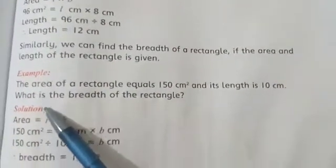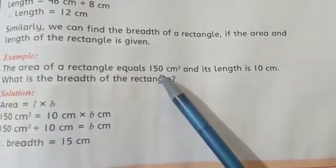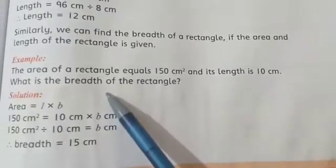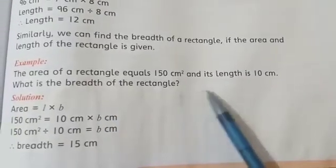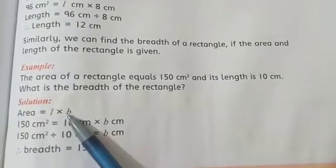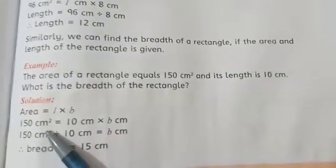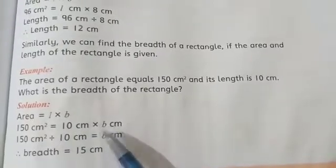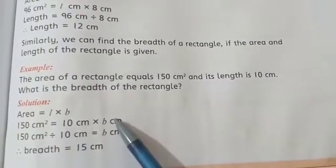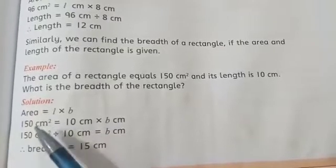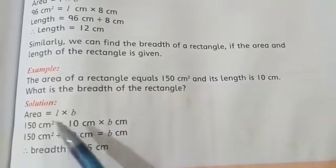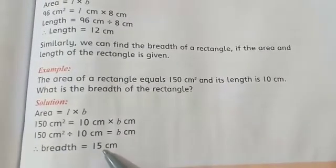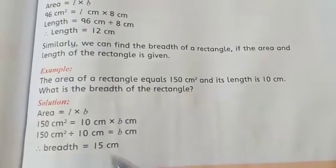Example number 2. The area of a rectangle equals 150 cm² and its length is 10 cm. What is the breadth of the rectangle? We will use the same method. Area equals length into breadth. Area is 150 cm². Length is also given, 10 cm. But breadth is not given. What do we do? To find out the breadth, we will shift the length. So when this is equal, this will divide. 150 divided by 10 equals 15 cm. So how much is the breadth here? 15 cm.